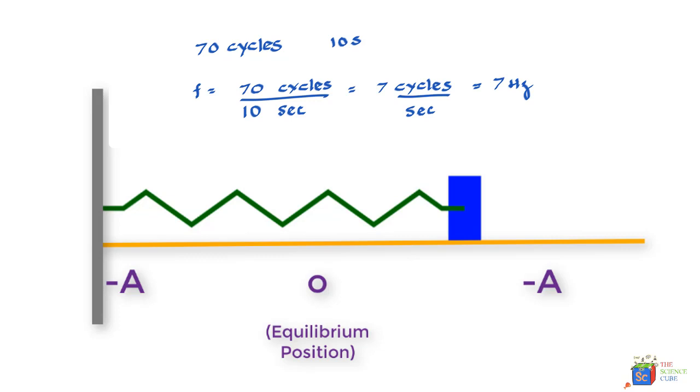We find that it is nothing but 70 cycles per 10 seconds, or 7 cycles per second, or 7 hertz, which is the frequency. So we say the frequency is 7 hertz.